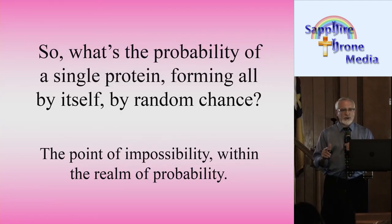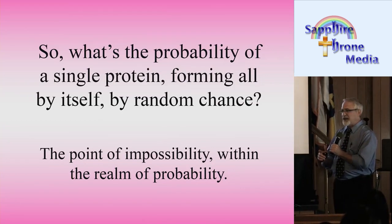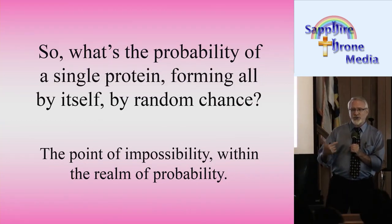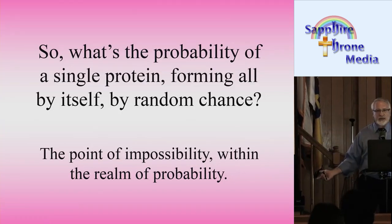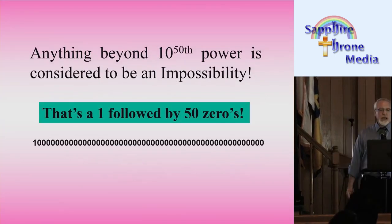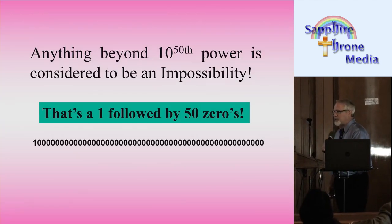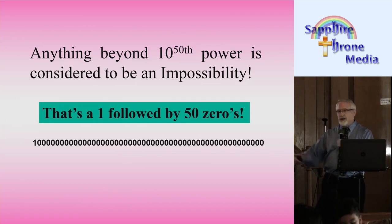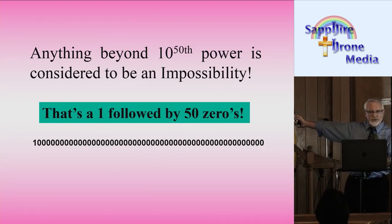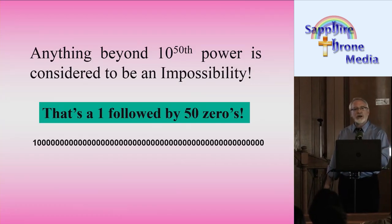Before answering that, let's look at the number that scientists say is beyond the realm of possibility — in other words, how big do the chances have to get before it's considered an impossibility? Anything beyond 10 to the 50th power is considered to be an impossibility. That is a one followed by 50 zeros. You won't win because it's an impossibility.